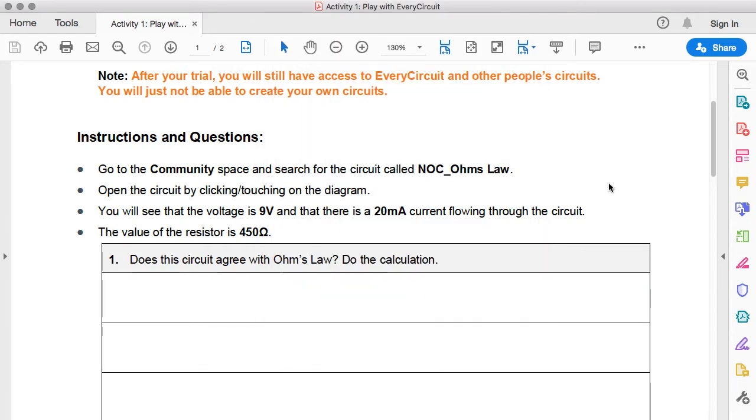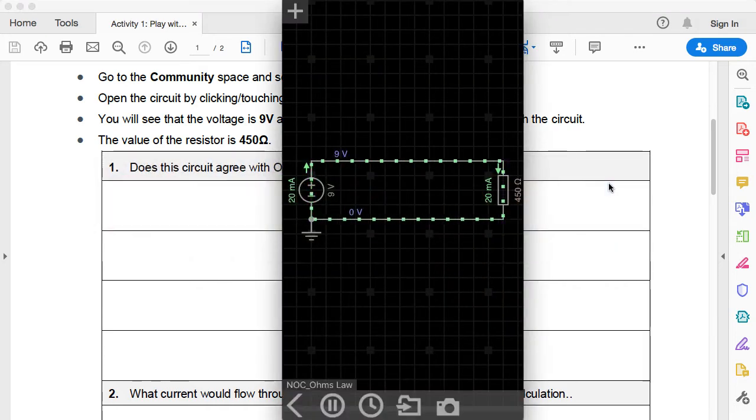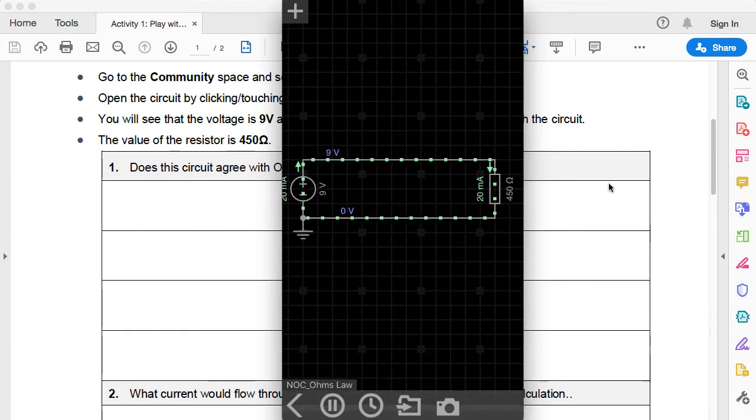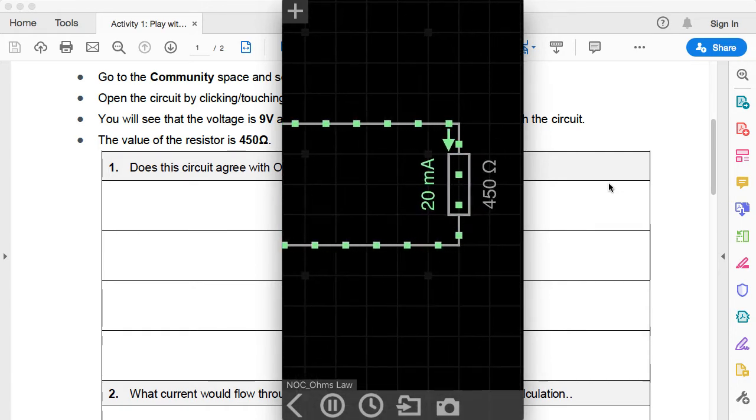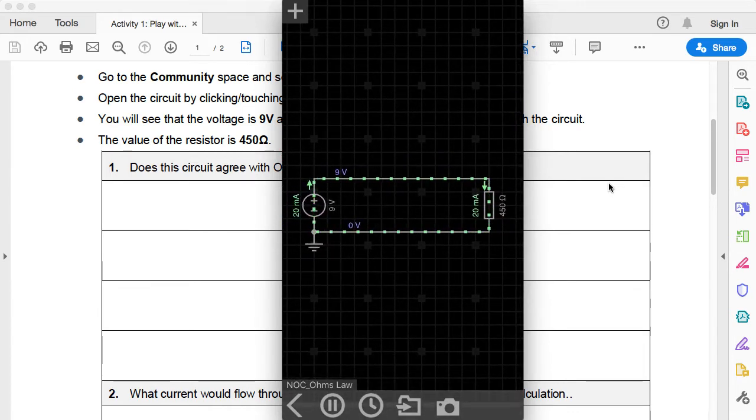The first question in our worksheet asks, does the circuit agree with Ohm's Law? Do the calculation. We can see that we've got a voltage of 9 volts, an amperage of 20 milliamps, that's our current, and a resistance, a total resistance here, this resistor, 450 ohms. Let's do some calculations and see if this circuit is in fact accurate.